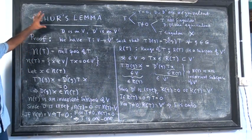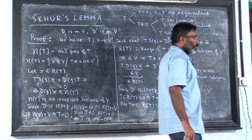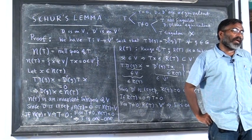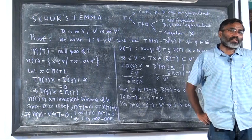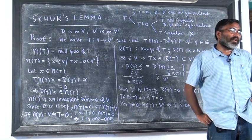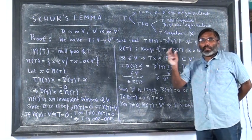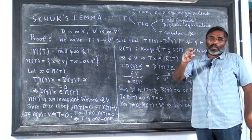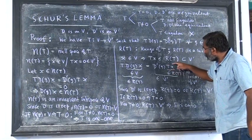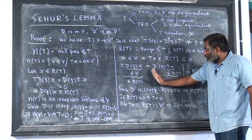This serves as the statement and proof of Schur's lemma, which is crucial for all other results and applications in group theory. Using this lemma we can prove the great orthogonality theorem. The argument for R(T) takes an element T(x) in R(T), shows that D prime_g acting on it remains within R(T) itself, confirming R(T) is an invariant subspace of V prime.